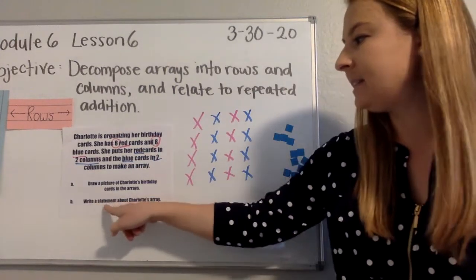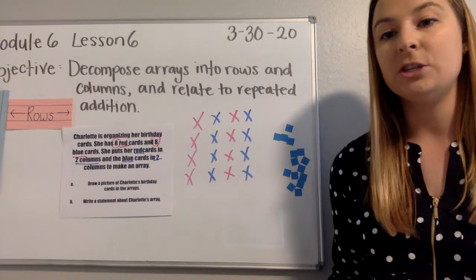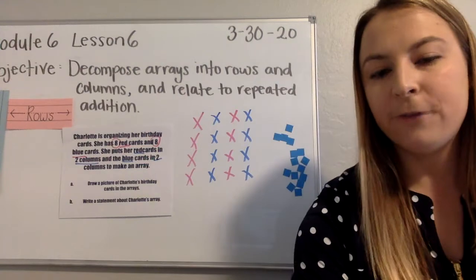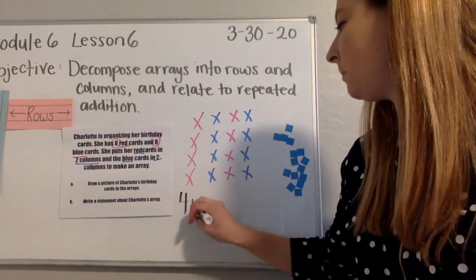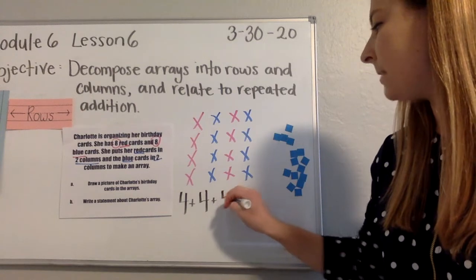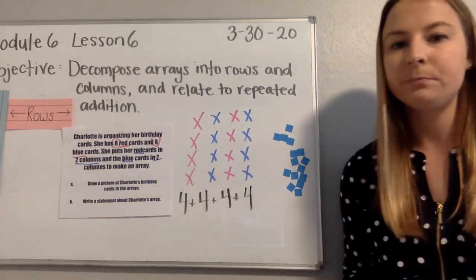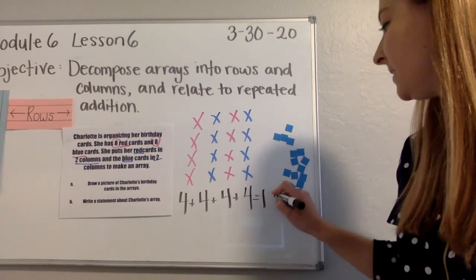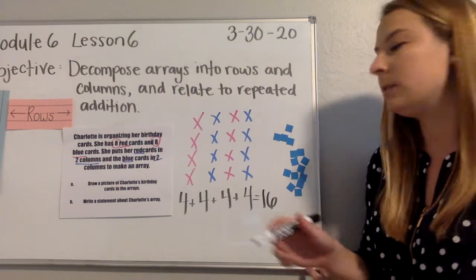Part B says write a statement about Charlotte's array. Before I write my statement, I would like to come up with a repeated addition sentence to find the total for how many birthday cards Charlotte has. My first column of birthday cards has four, plus the second column has four, plus the third column has four, plus the fourth column has four. If I add up four plus four plus four plus four, I would get a total of 16 cards. And if I was going to write a statement about Charlotte and her birthday cards, it would be